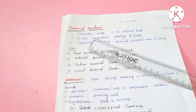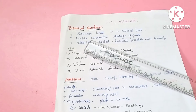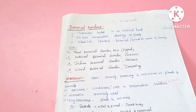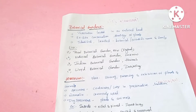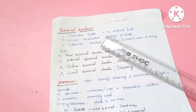The next taxonomical aid is Botanical Gardens. A botanical garden is an institution with an enclosed area where plants are grown outside their natural habitat. This is known as ex-situ conservation — conservation outside the natural habitat, in a well-protected enclosed area.